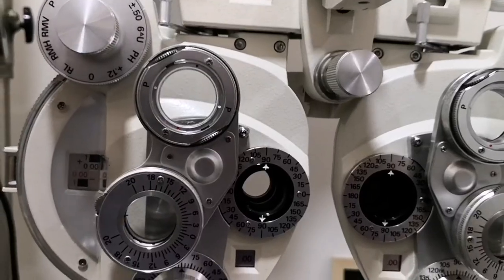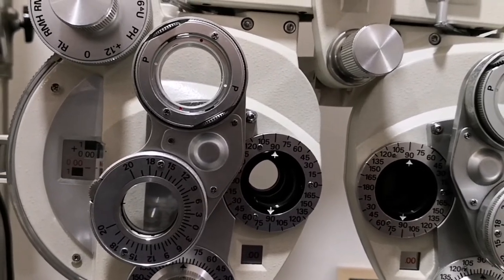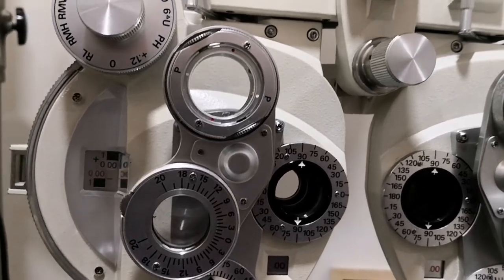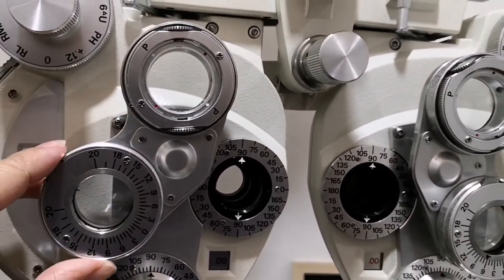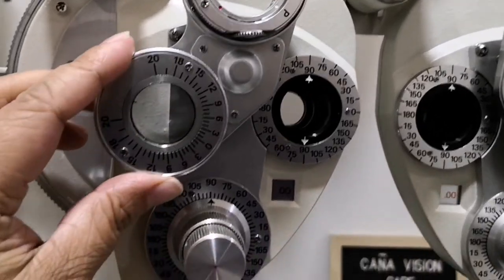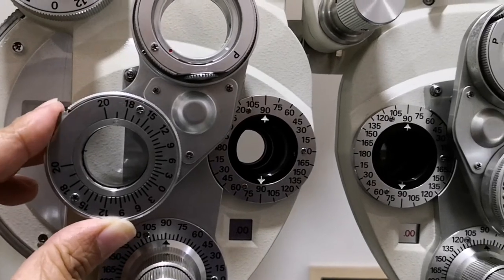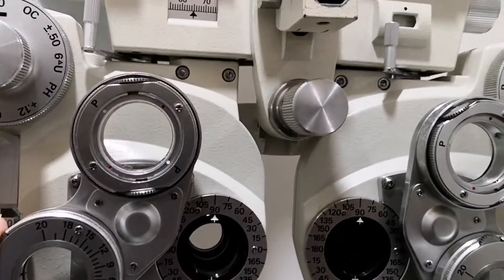Next, we have the ancillary unit. It is called ancillary because it is attached to the phoroptor. It is usually composed of two or three units that can be rotated in front of the eye. But for this phoroptor, we only have two. This is the rotary prism or the Risley prism. It has an indicator and a base.